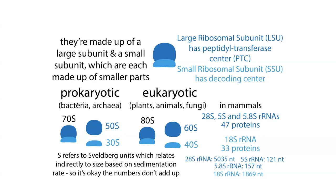In prokaryotes — bacteria and archaea — the full ribosome is a 70S, made up of a 50S large subunit and a 30S small subunit. The S refers to Svedberg units, which relate to sedimentation rate — how fast these particles sink in a gradient when spun. It's not directly additive, which is why 50S plus 30S equals 70S, not 80S. An 80S ribosome is eukaryotic — plants, animals, fungi — made up of a 60S LSU and a 40S SSU. Each subunit is made up of proteins and RNAs, and the bulk of the hard work is actually carried out by the RNA.